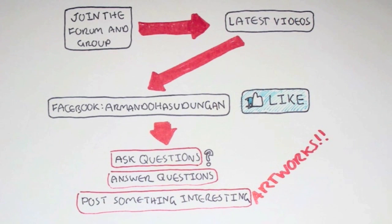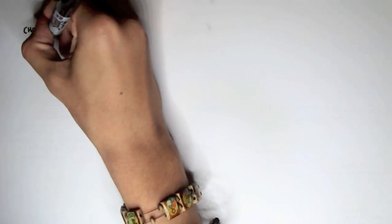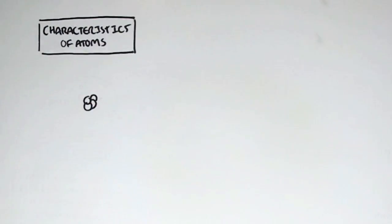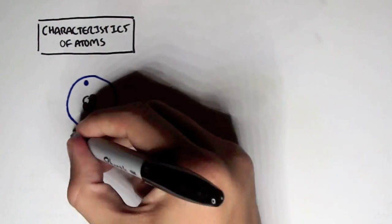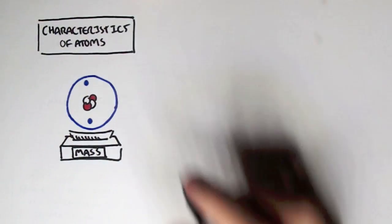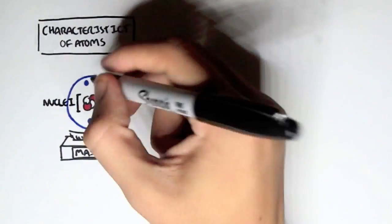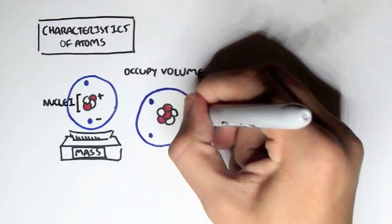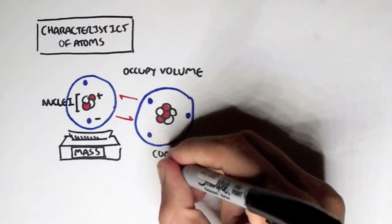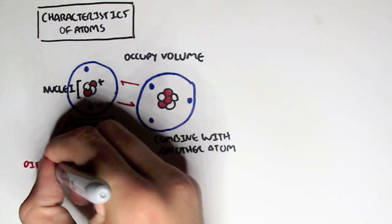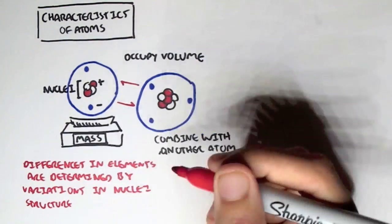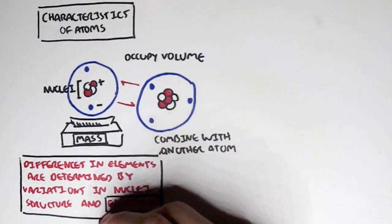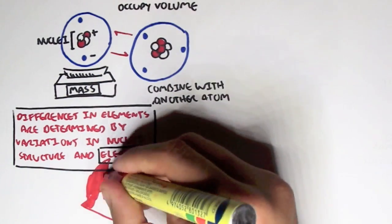In this video we are going to talk about orbitals of electrons. Let's begin with the atom. Now let's look at some characteristics of the atom first. An atom has a mass and an atom also occupies a volume. The nucleus is positively charged and the electrons around it are negatively charged. Atoms can also combine with other atoms to form a bond. What's important to know is that the differences in elements are determined by the variations in nuclei structure and the electrons. In this video we are actually going to concentrate on electrons.